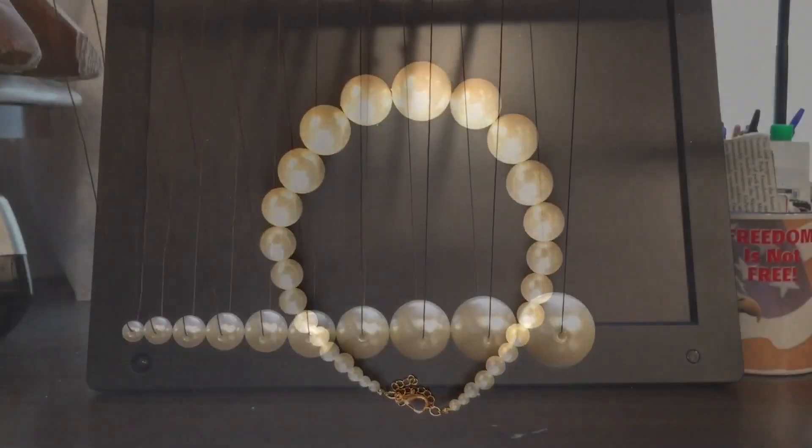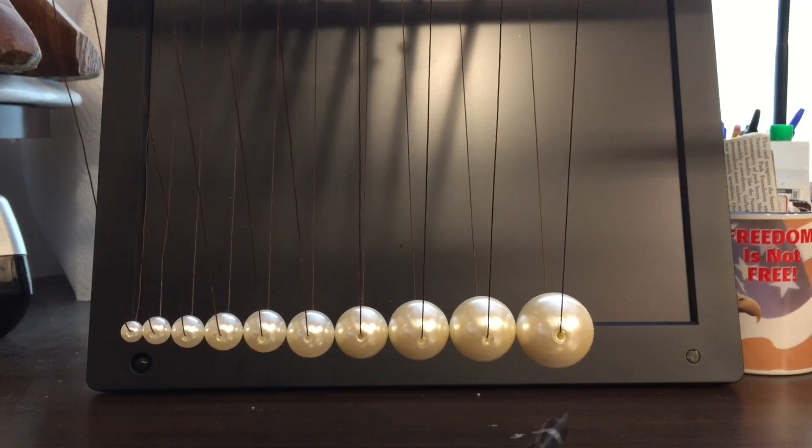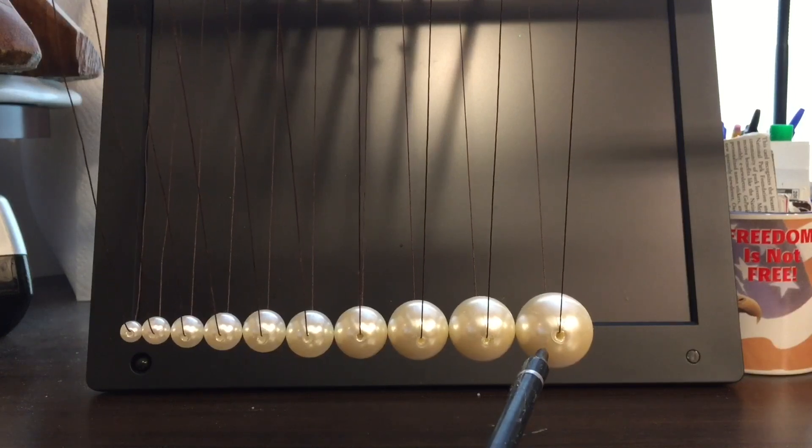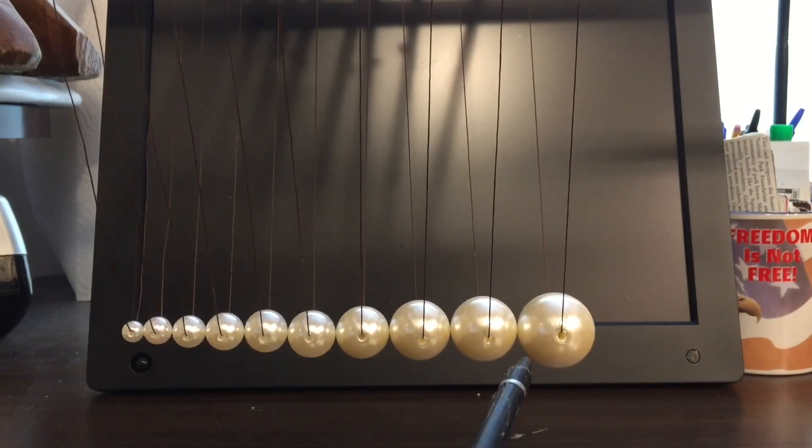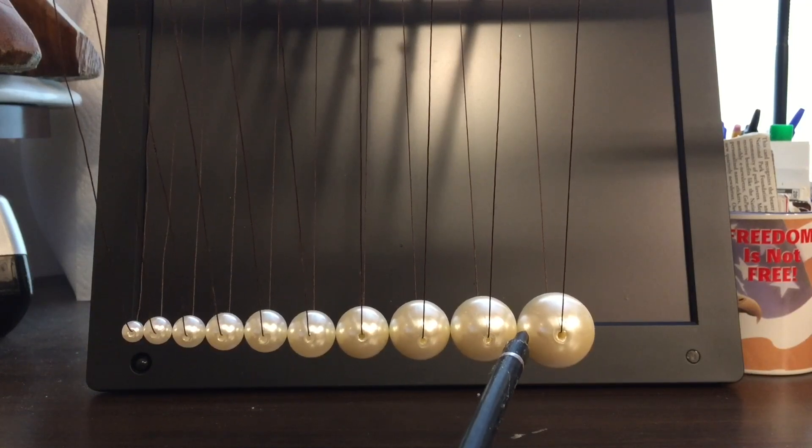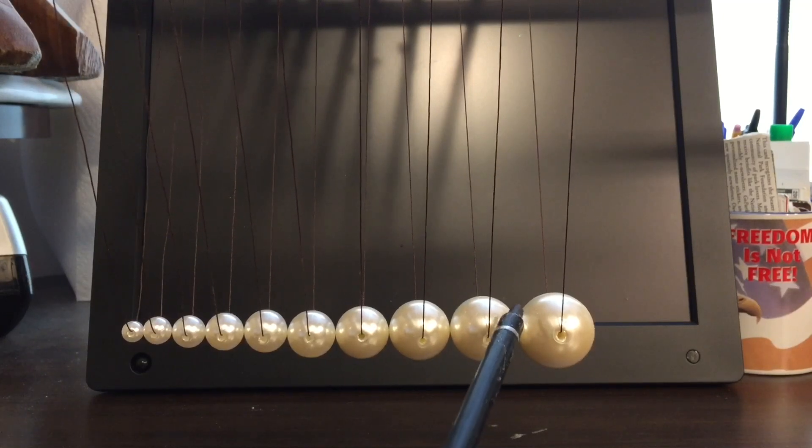This is our modified Newton's cradle. We're using the beads from the bead necklace I showed you. You can see how nicely they're tapered in size from this large bead here down to the small one. They're fairly elastic, not quite as good as the steel, and it'd be nice if they had more mass like the steel, but I think it'll still show.